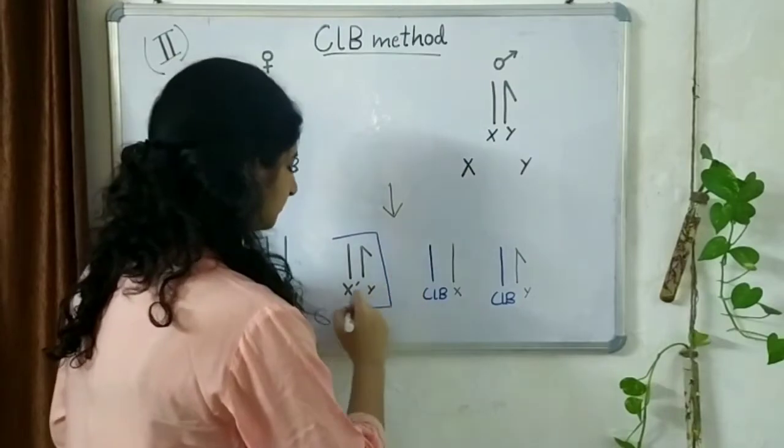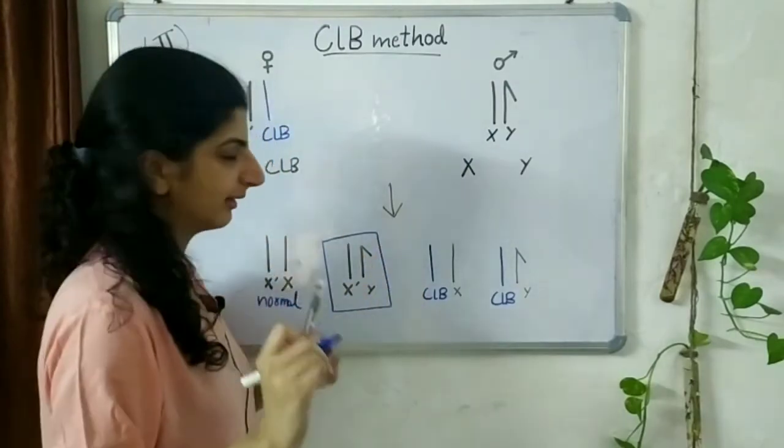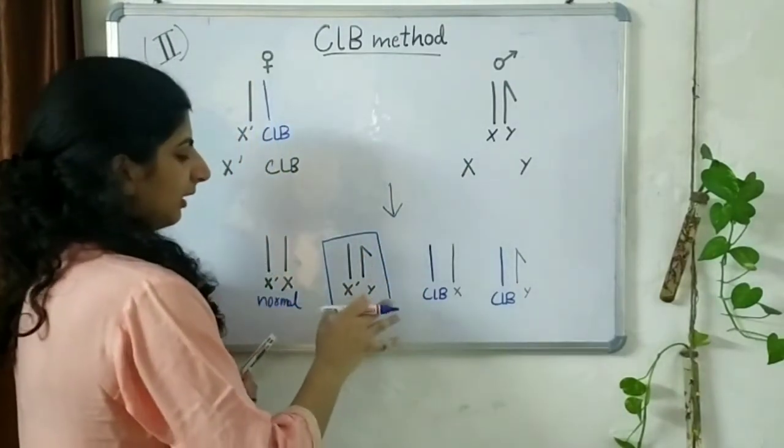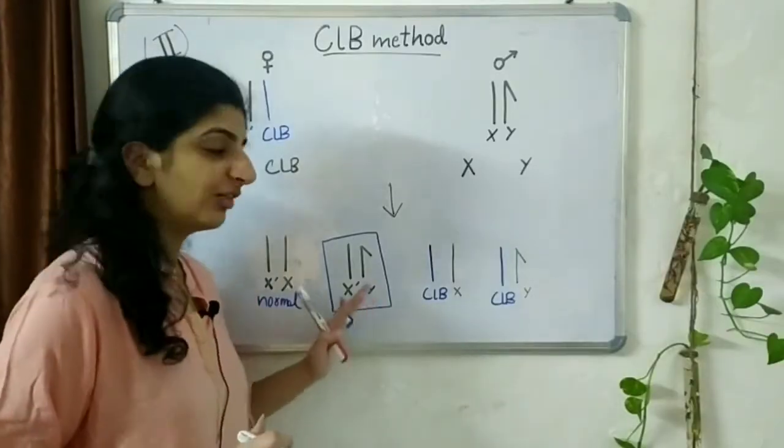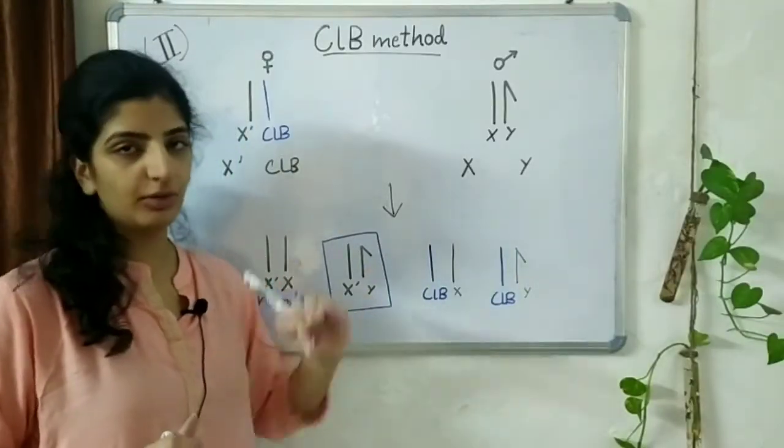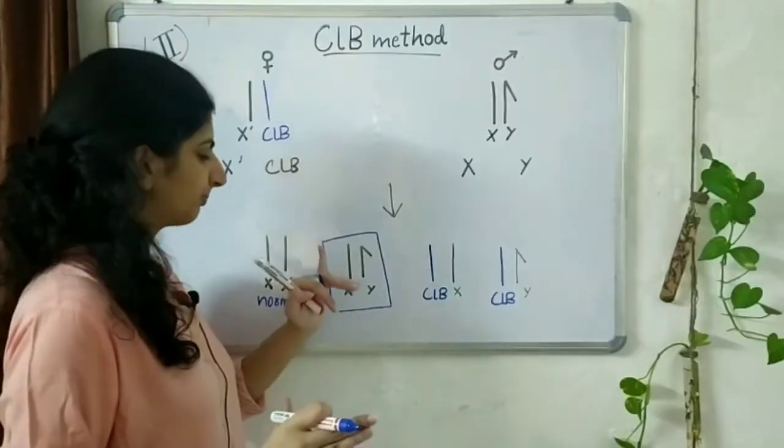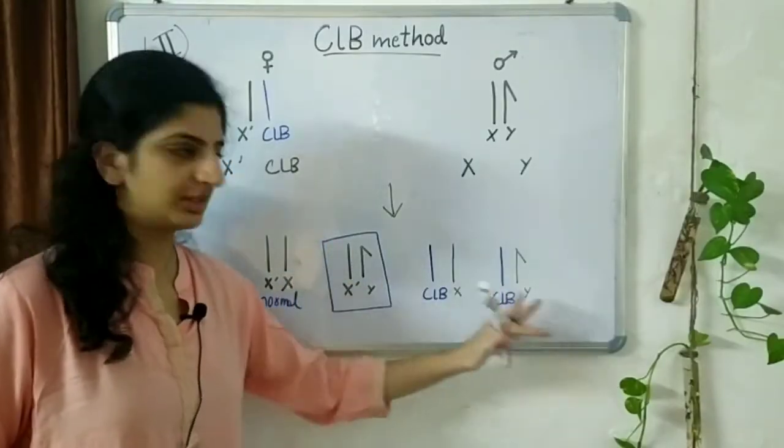This one is what we are going to look at now. This is the progeny that is going to decide whether the X dash is mutated or not. How? We will look at that once we are done with these two.